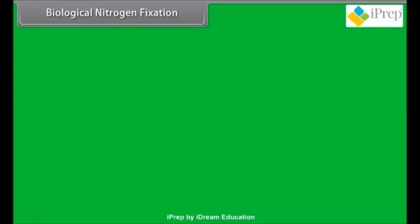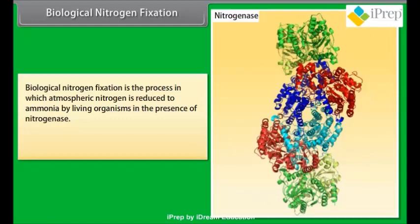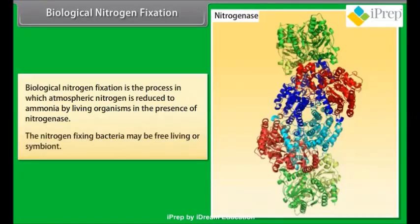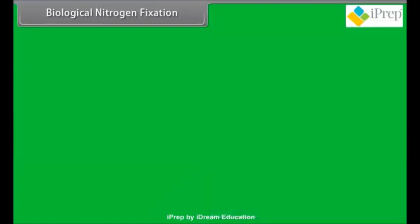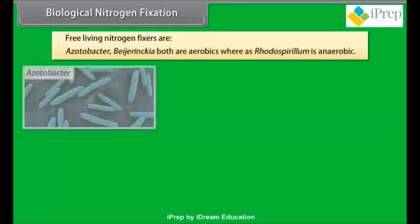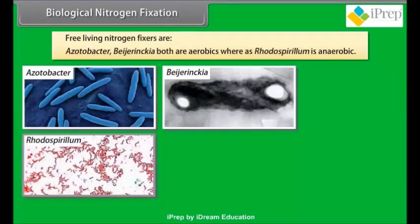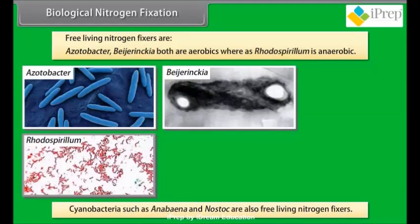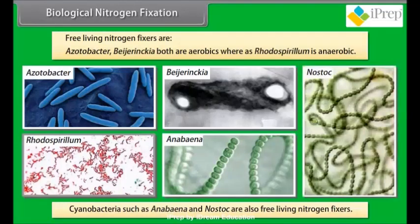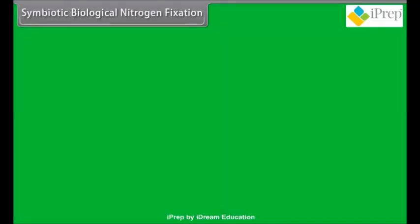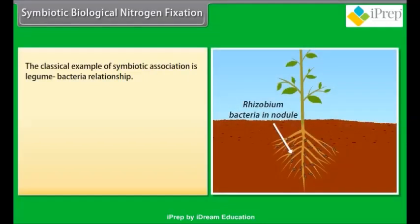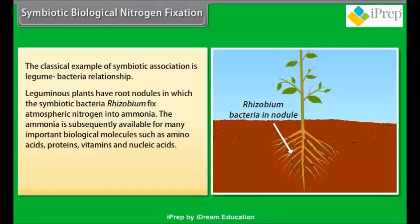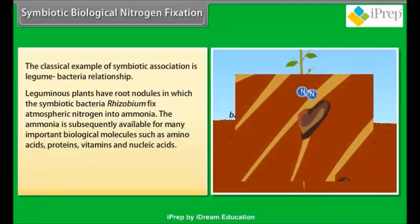Biological nitrogen fixation: this is the process in which atmospheric nitrogen is reduced to ammonia by living organisms in the presence of nitrogenase. The nitrogen-fixing bacteria may be free-living or symbiotic. Free-living nitrogen fixers include Acetobacter, Beijerinckia (both aerobic), and Rhodospirillum (anaerobic). Cyanobacteria such as Anabaena and Nostoc are also free-living nitrogen fixers. The classical example of symbiotic association is the legume–bacteria relationship. Leguminous plants have root nodules in which the symbiotic bacteria Rhizobium fix atmospheric nitrogen into ammonia.